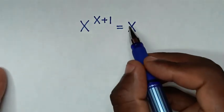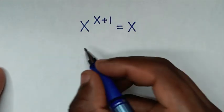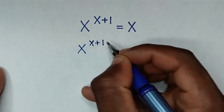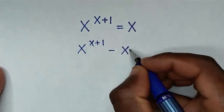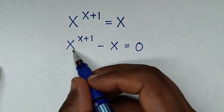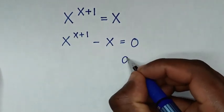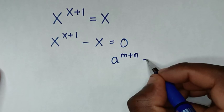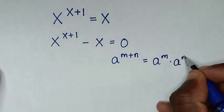In the first step we will take this x into the left side, so it will be x power of x plus 1 minus x is equal to 0. Then x power of x plus 1 is in the form of a power of m plus n, which is equal to a power of m times a power of n.